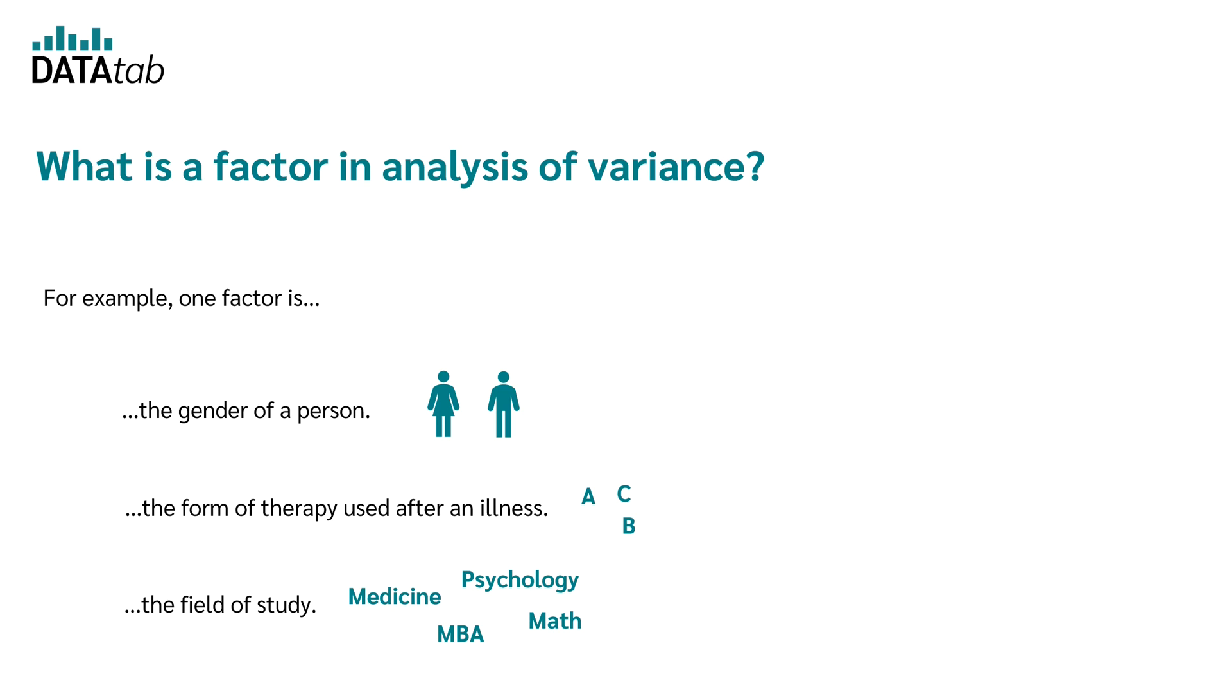In the case of analysis of variance, a factor is therefore a categorical variable. You use an analysis of variance whenever you want to test whether these categories have an influence on the so-called dependent variable.